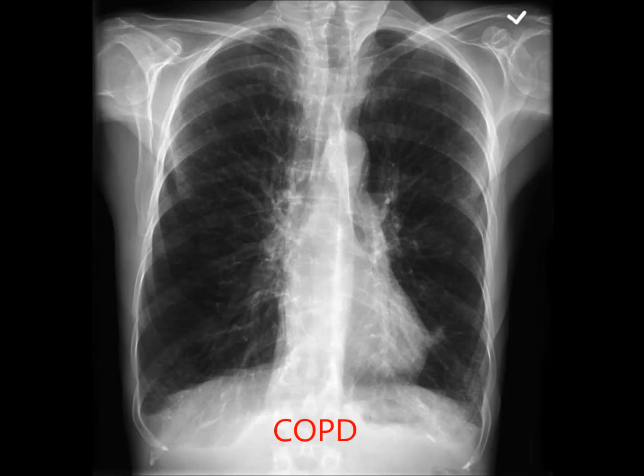The blunted costophrenic angles are a little bit of a red herring — they're actually the result of the flattened diaphragm. The areas of opacity in the hyla are likely due to calcification of pulmonary blood vessels, so I would strongly suspect that this patient was a heavy smoker. Smoking is bad for you, and this is what happens — so the lesson is: don't smoke.